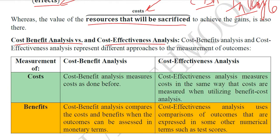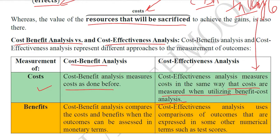In CBA, the measurement of cost happens as before — costs are physical and monetary in nature. In CEA, the cost is measured using the same methodology, since establishing a literacy program still requires incurring financial, tangible costs that are recorded the same way as in CBA. So there is no major difference in how costs are handled between CBA and CEA.